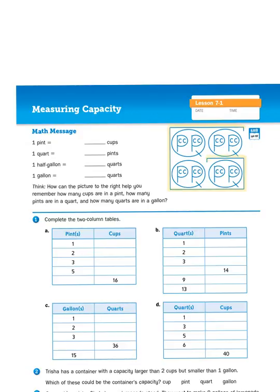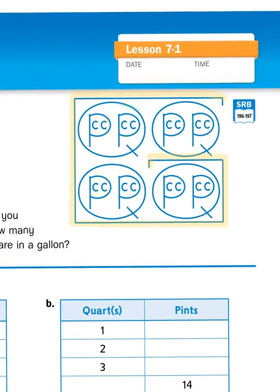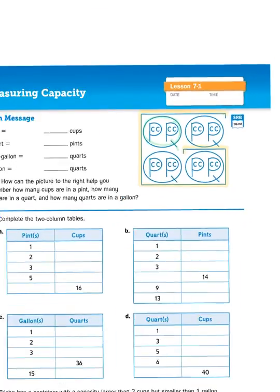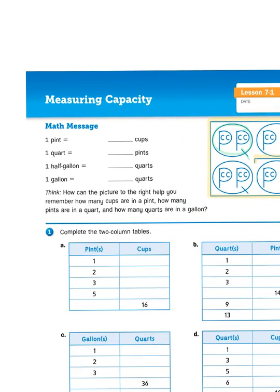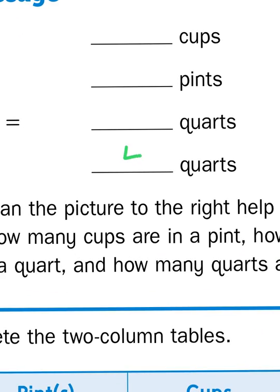And inside that letter G, we see four letter Qs. Q stands for quart. So if there are four Qs embedded inside this G, then we can infer that they mean that there must be four quarts for every gallon.